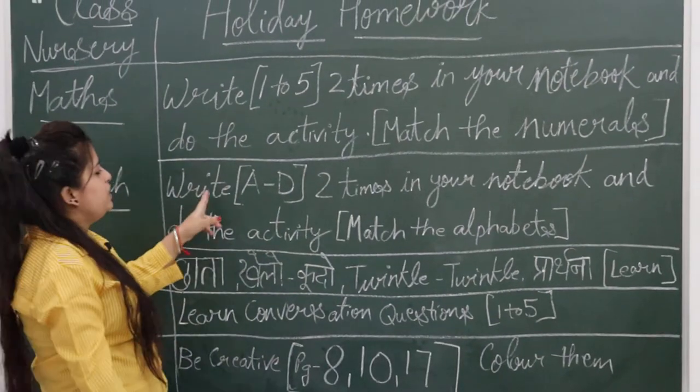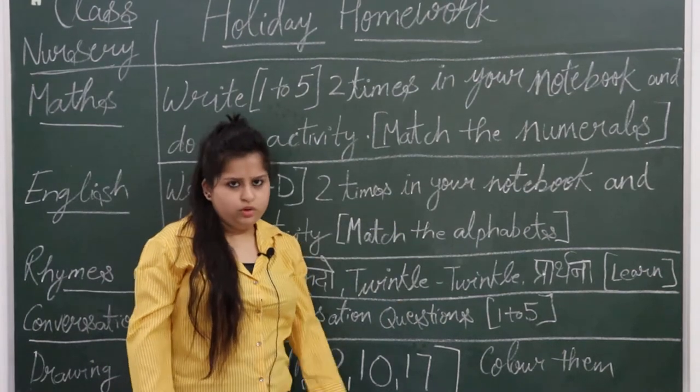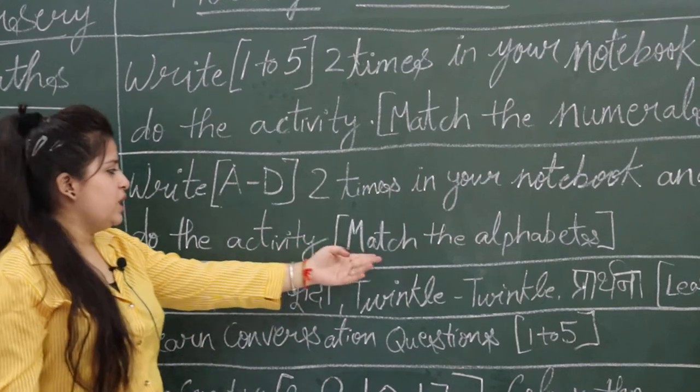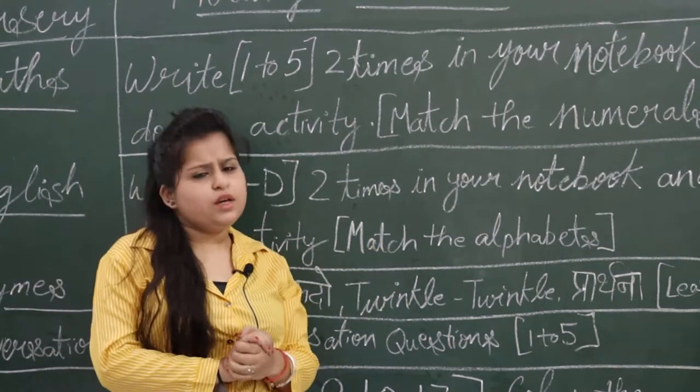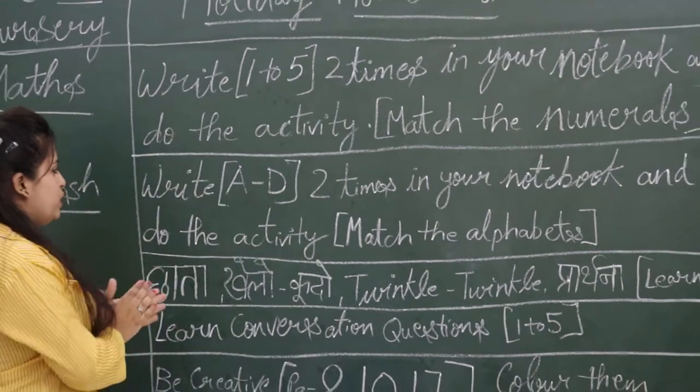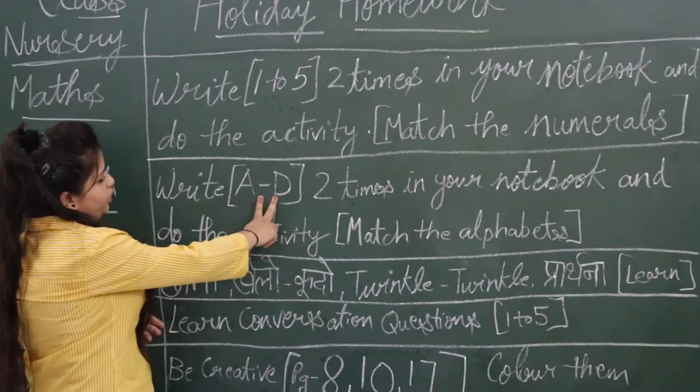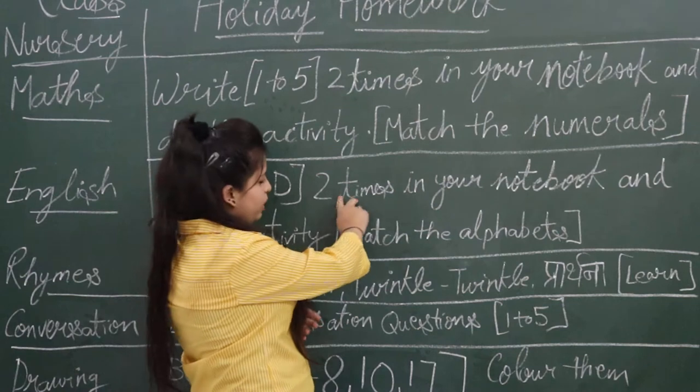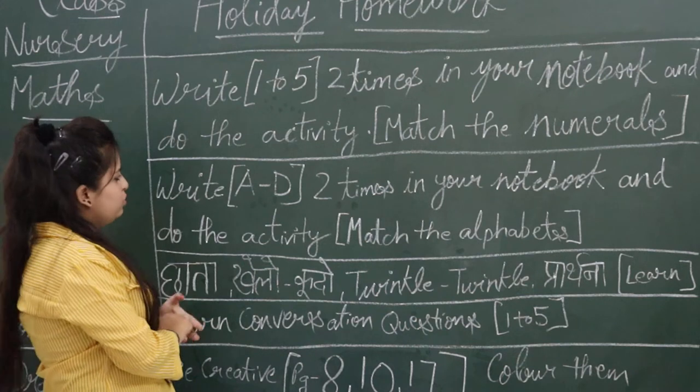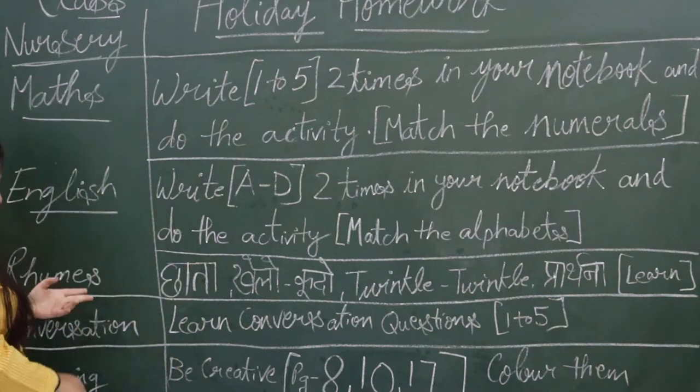Next is English. You have to write A to D two times in your notebook. And you have to do the activity: match the alphabet, A to D. You have to write it in your notebook and do the activity.